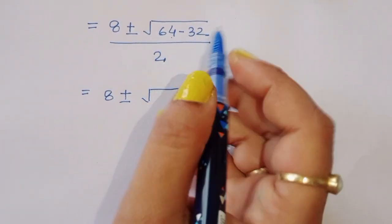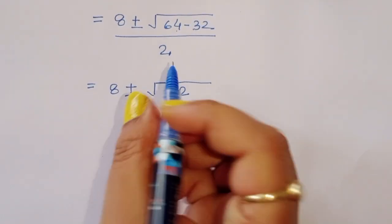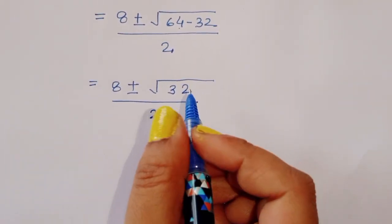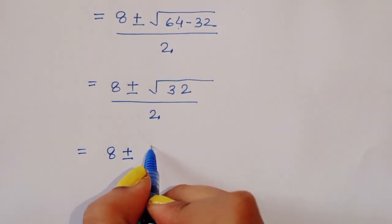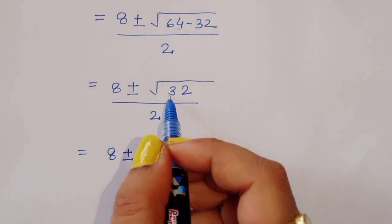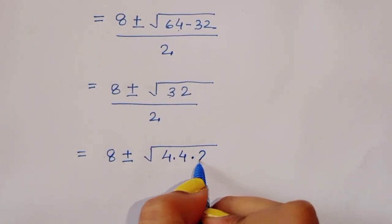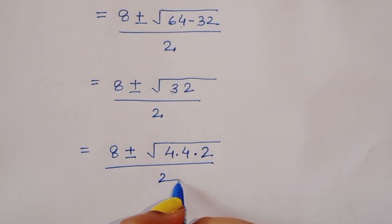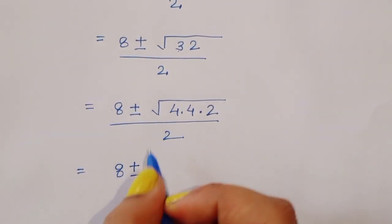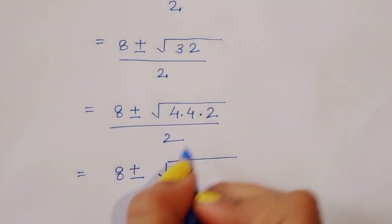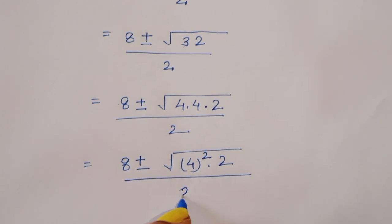Simplifying inside the square root: 64 minus 32 equals 32. So we have 8 plus or minus square root of 32, divided by 2. We can write 32 as 16 times 2.